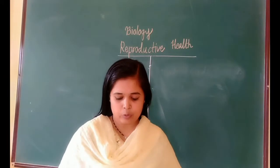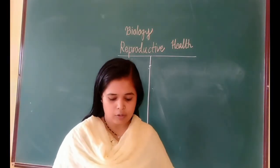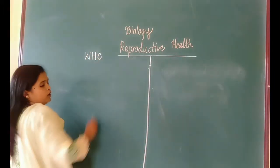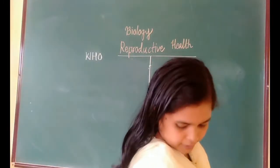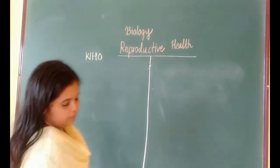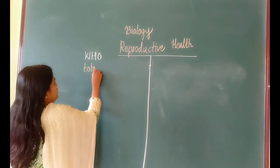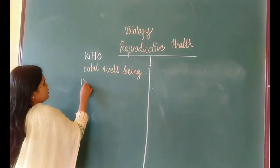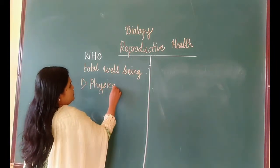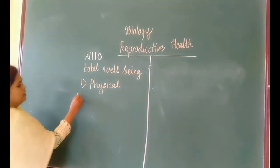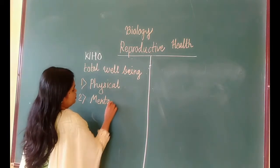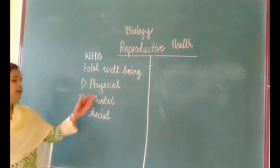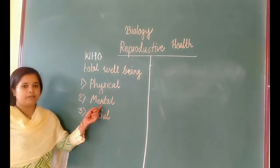This term simply refers to healthy reproductive organs with normal functions. According to the World Health Organization (WHO), reproductive health is defined as the total well-being of a person in all aspects. These aspects are: first, physical — the person should be physically healthy with no disease; second, mental — the person should be mentally strong; and third, social.